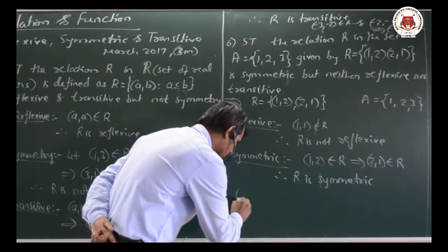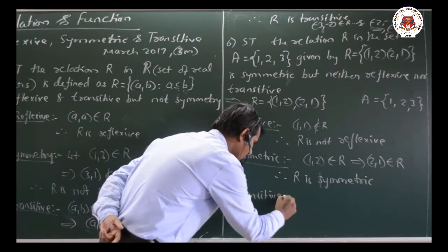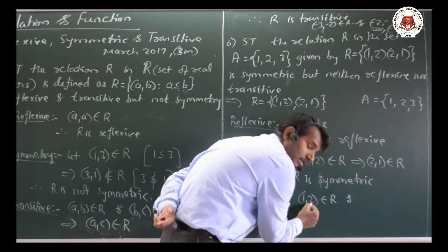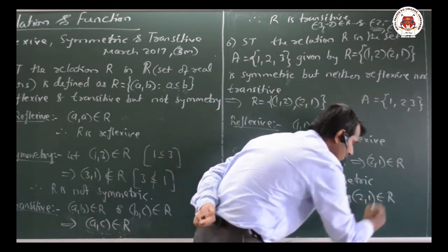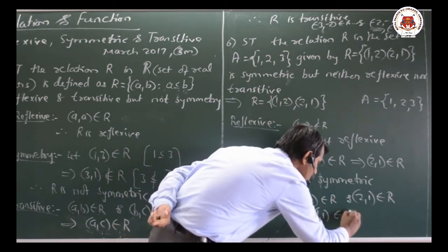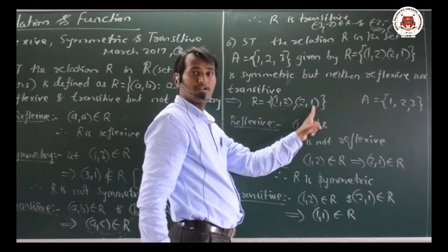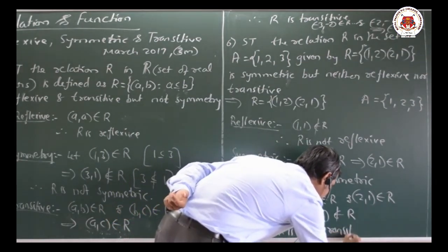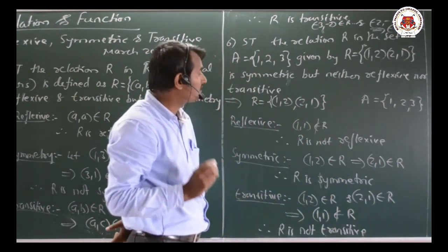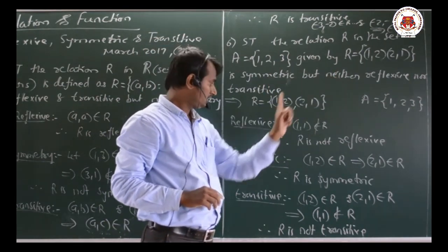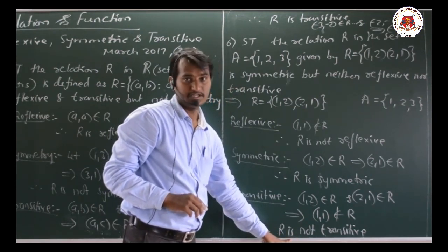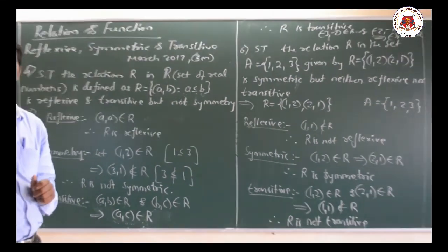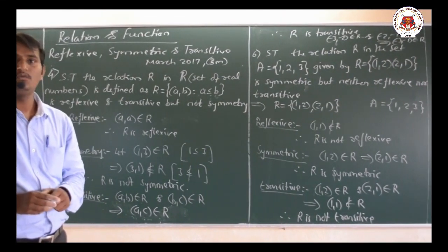For transitive: (1,2) belongs to R and (2,1) belongs to R. This implies (1,1) should belong to R, but (1,1) does not belong to R. Therefore R is not transitive. So the relation R is symmetric but neither reflexive nor transitive. Please review the videos and pause to note it down. In the next class we shall continue with the remaining problems of exercise 1.1. Thank you, friends.